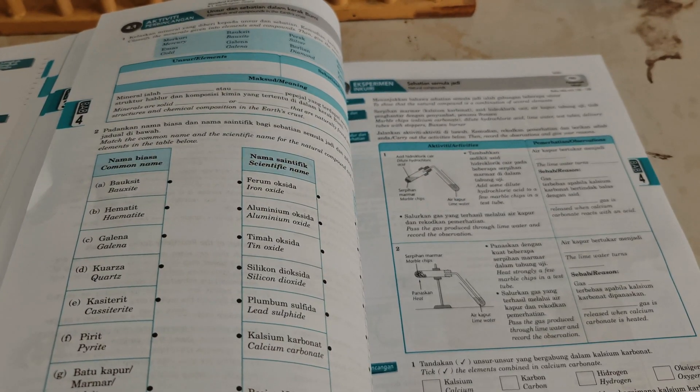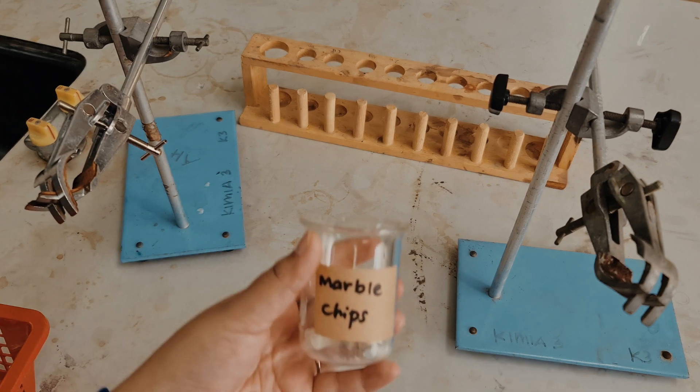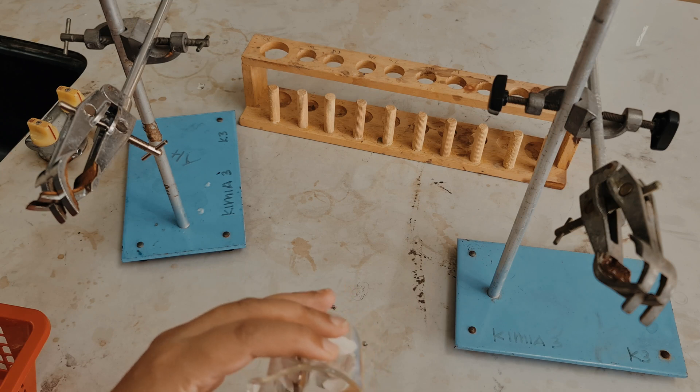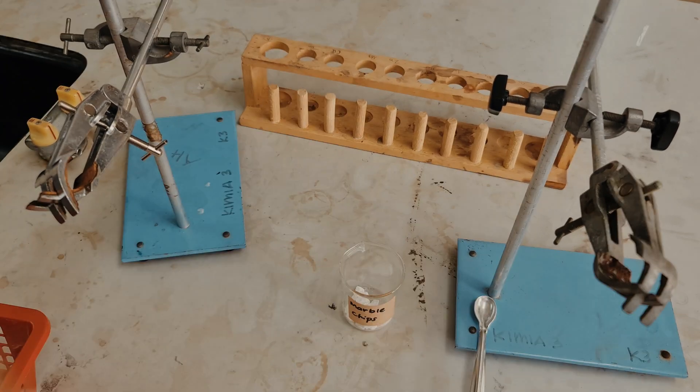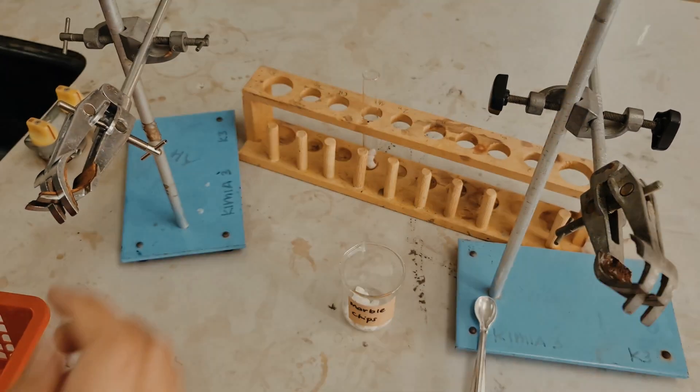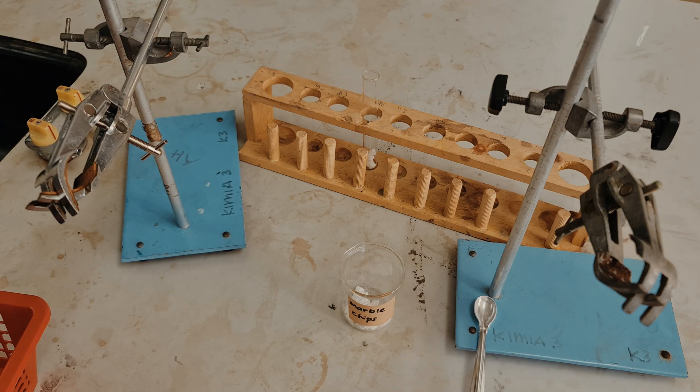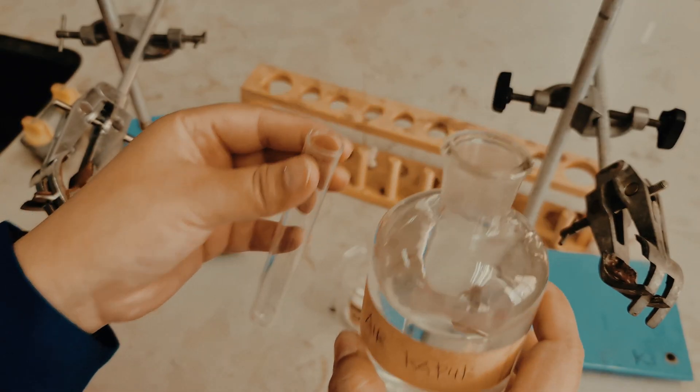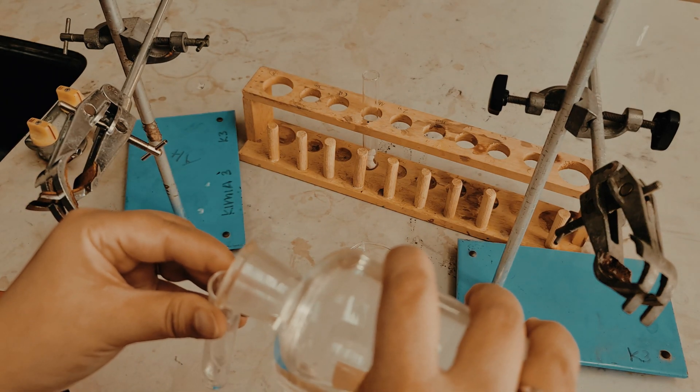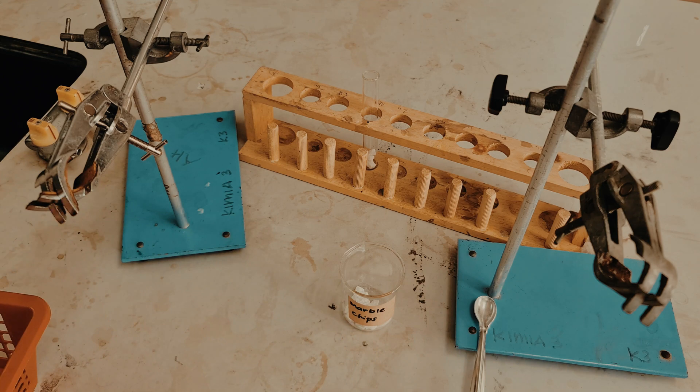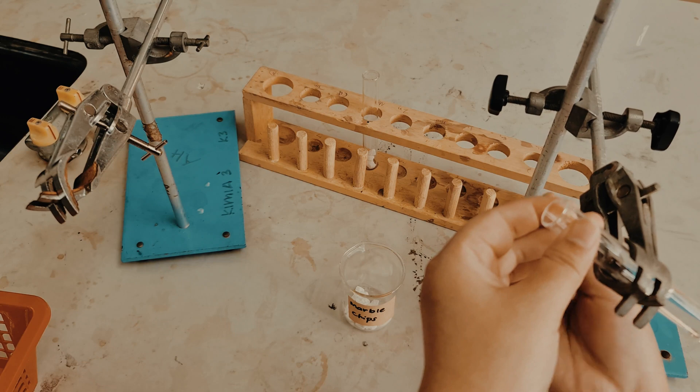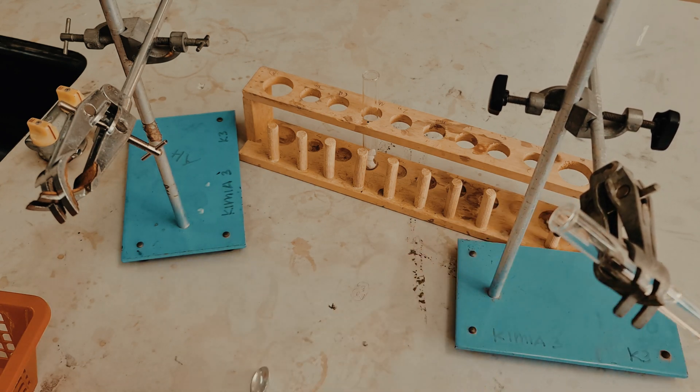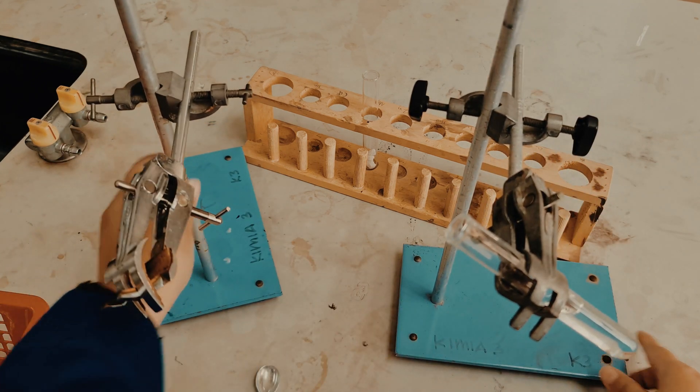Alright, now let's set up the apparatus. First, I'm going to add some marble chips into the test tube. I'm going to add some limewater into another test tube and we put it on the retort stand.